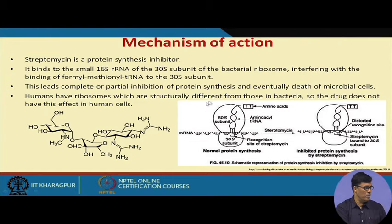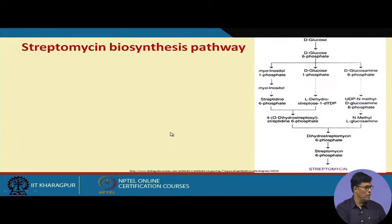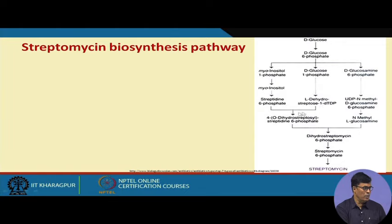Streptomycin disturbs essential protein synthesis and kills microorganisms. Looking at the biosynthesis pathway, glucose produces glucose-6-phosphate, then inositol-1-phosphate, then D-glucose-1-phosphate, glucosamine-6-phosphate, and myo-inositol. When these combine, they ultimately form dihydrostreptomycin-6-phosphate, which is then converted to streptomycin.